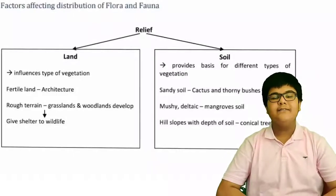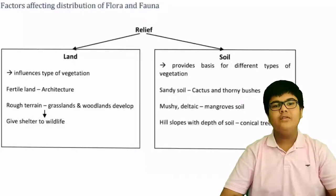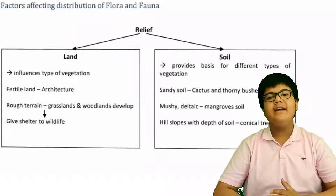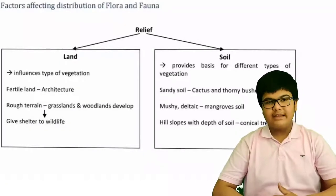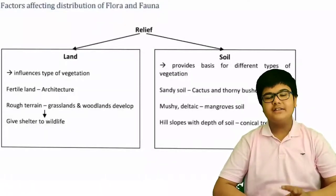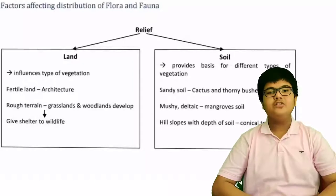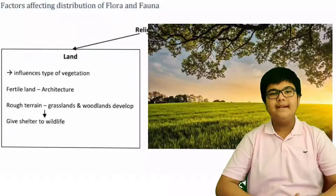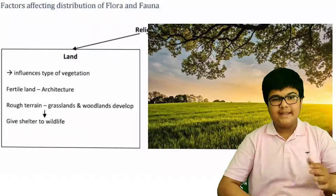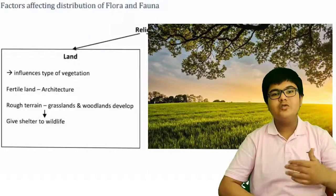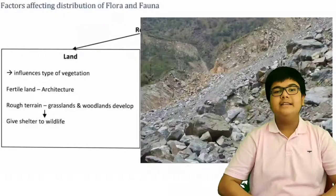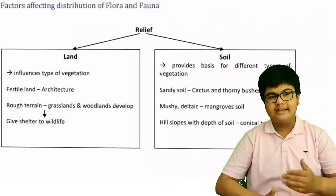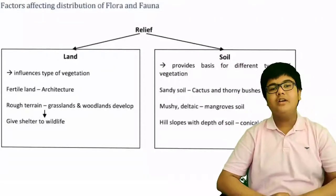Now let us understand the factors affecting the distribution of flora and fauna. There are two major factors: relief and climate. Under relief, the two main factors are land and soil. Land influences the type of vegetation — fertile plains are used for agriculture, while rough mountainous terrains develop grasslands and woodlands.